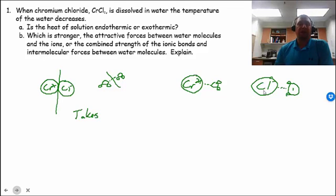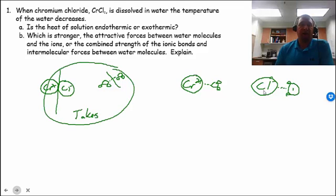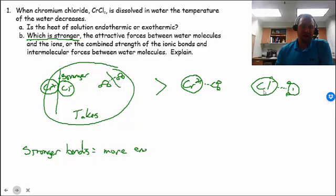Now, we already know that in this particular case, this takes more energy to break than is released when these are formed because of the fact that this is endothermic. So that implies that these bonds are stronger overall than these bonds. So when it asks, which is stronger, the stronger is the harder to break or the bonds that require the most energy. So stronger bonds equals more energy to break them, and that's how you can explain what's going on here.